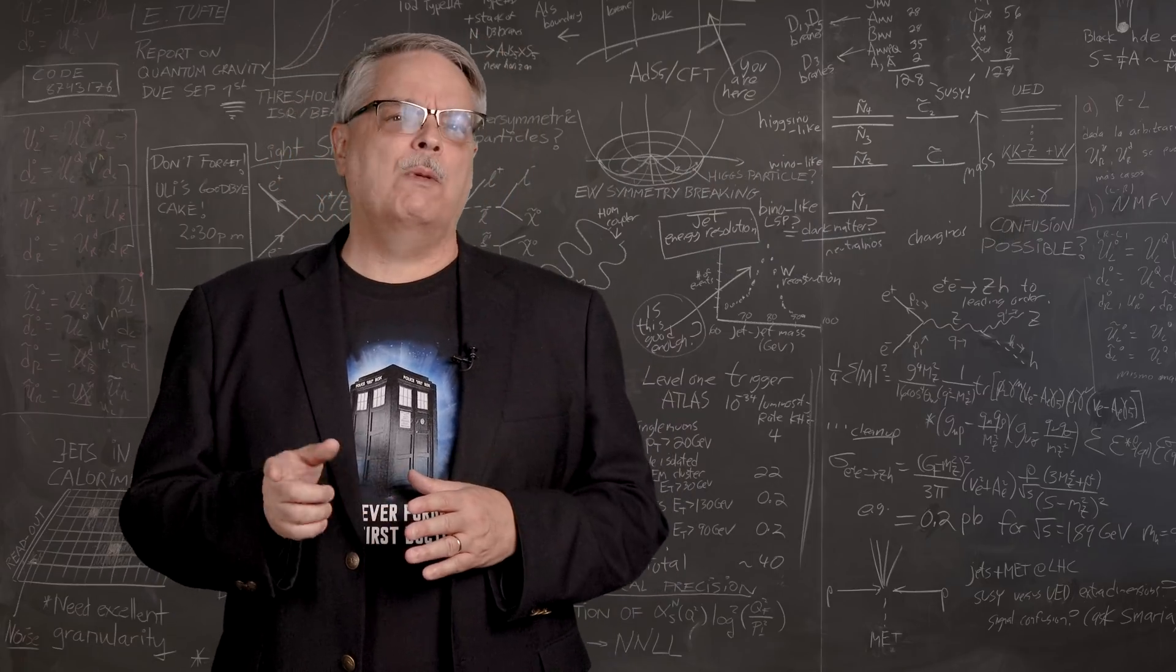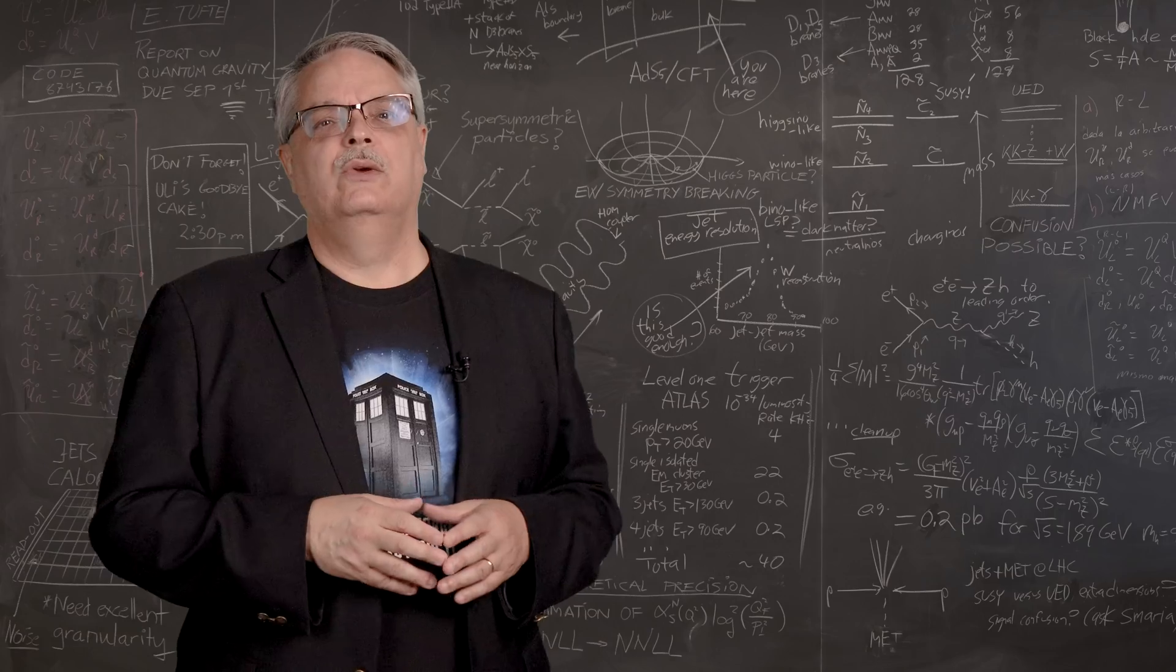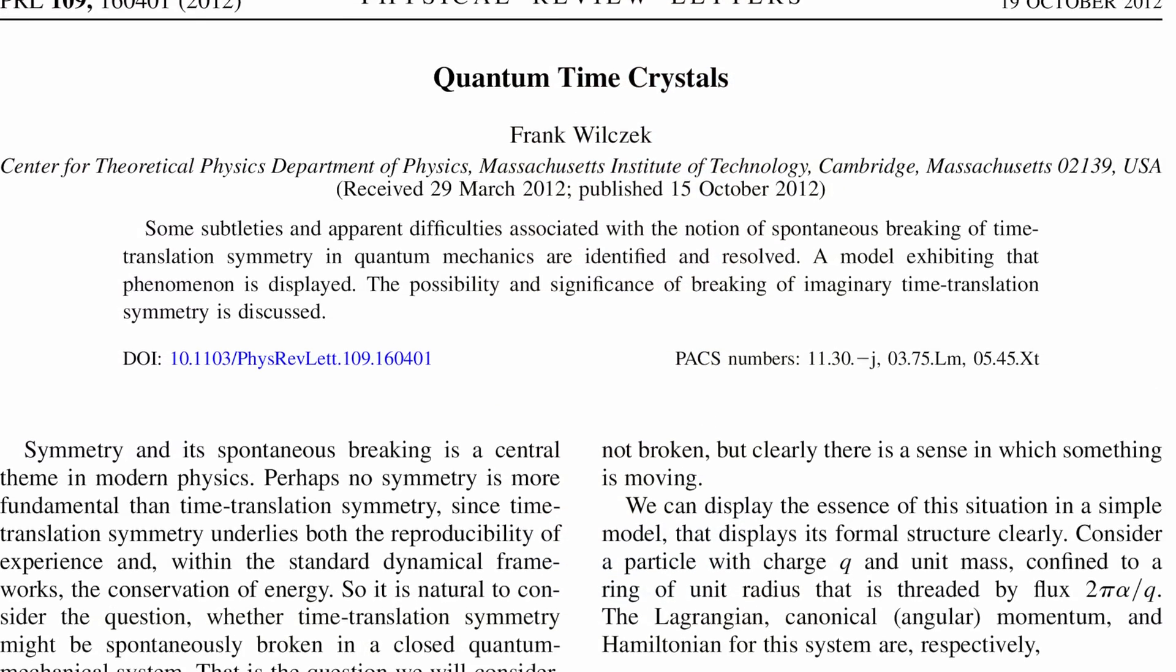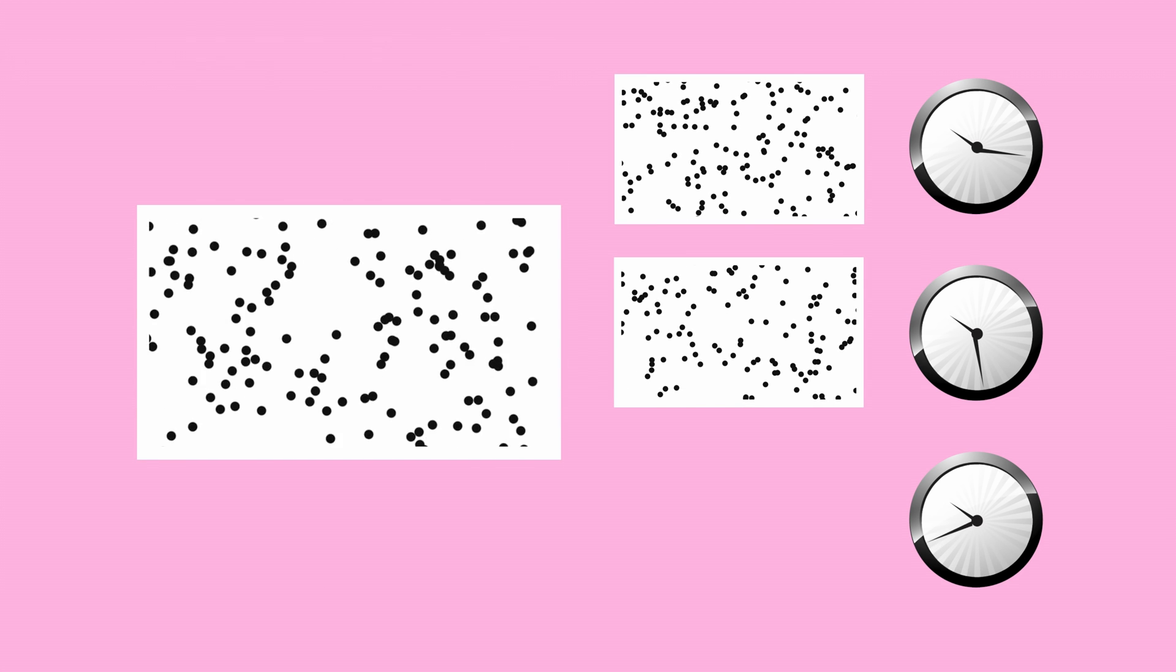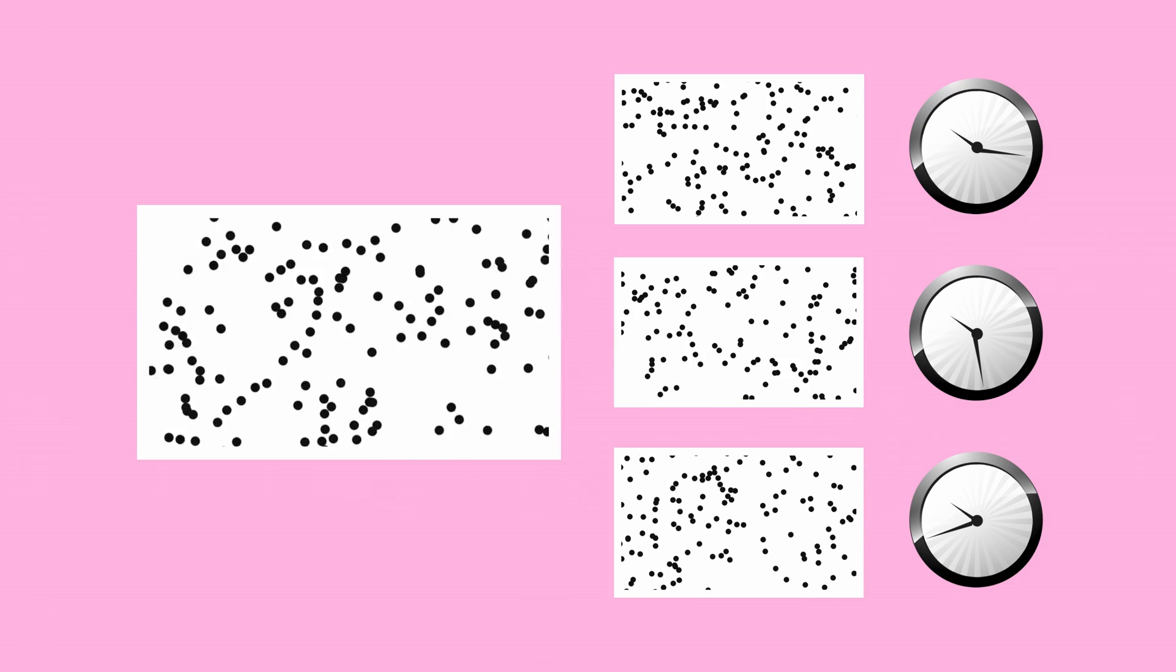Time crystals were first proposed in 2012 when Professor Frank Wilczek of MIT described them in an article called Quantum Time Crystals. At the atomic level, ordinary matter looks pretty much the same, no matter when you look at it. This is called having translational time symmetry.